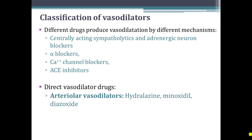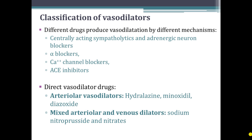The classical vasodilators include arteriolar vasodilators: hydralazine, minoxidil, and diazoxide. And there are mixed arteriolar and venous dilators which include sodium nitroprusside and nitrates. We will learn in detail about organic nitrates in the lectures on angina pectoris, but today we will focus on arteriolar vasodilators and mixed arteriolar and venous vasodilators.